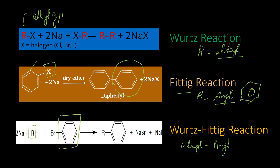In the Wurtz-Fittig reaction, alkyl and aryl groups are combined to form a product. For example, with toluene: using an aryl halide and an alkyl halide such as CH3I together with sodium metal, the product is formed with a methyl group attached to the phenyl ring — this is the Wurtz-Fittig reaction.